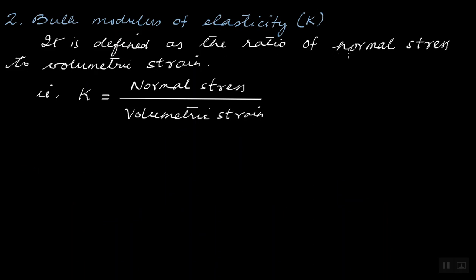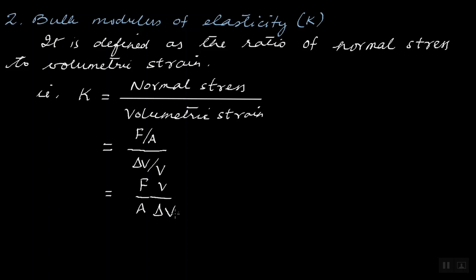The second modulus of elasticity is the bulk modulus of elasticity, denoted by K. It is defined as the ratio of normal stress to volumetric strain: K = (F/A) / (ΔV/V). Here F/A can be replaced by pressure P, giving K = PV / ΔV.